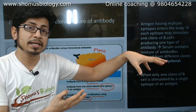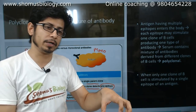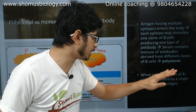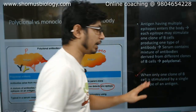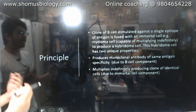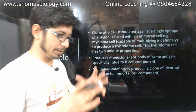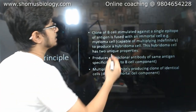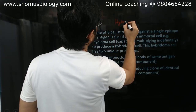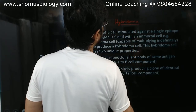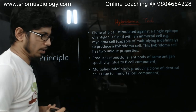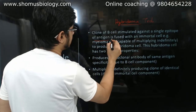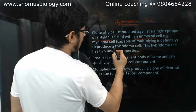The beautiful technology — the experiment, the process of producing monoclonal antibody — landed a Nobel Prize. When only one clone of B cell is stimulated by a single epitope of an antigen, only then is the monoclonal antibody produced. The principle used to produce monoclonal antibody is known as hybridoma technology. The clone of B cells stimulated against a single epitope of antigen is fused with an immortal cell to produce a hybridoma cell.